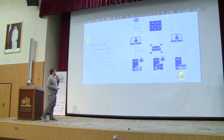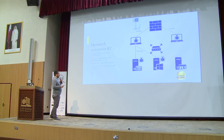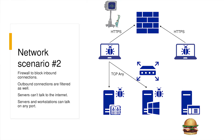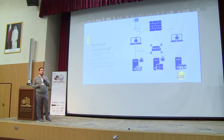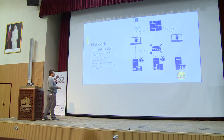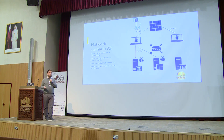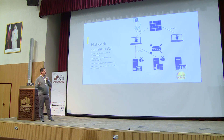Scenario two: the firewall is blocking everything inbound but also doing outbound filtering. The servers don't have direct access to the network and you have to move laterally through an infected host. In this case, we're going to use HTTPS to communicate back to the C2 environment, and we can use any protocol internally in the network. They will adjust their security and upgrade the infrastructure, so we need a different way of communication and data exfiltration.